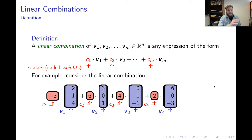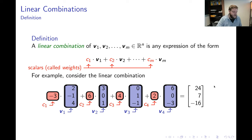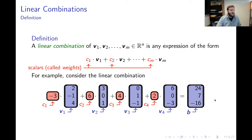If I scale each of these four vectors and add everything up, it turns out that I produce the vector 24, 7, negative 16.